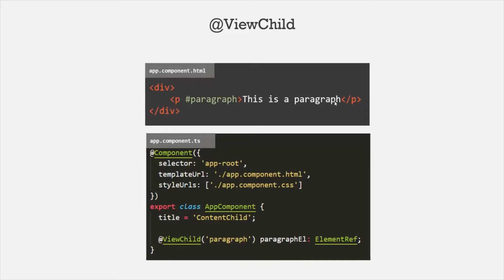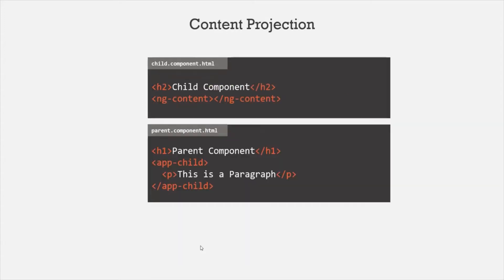Using @ViewChild decorator, we accessed an HTML element from the view template in our component class. In simple terms, we can access the view of a component using @ViewChild decorator. This HTML is the view for the appComponent class, and we can access that view using @ViewChild decorator. Then, we also learned about content projection.